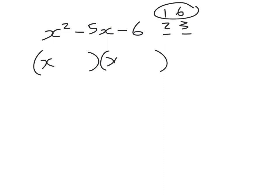So the x goes there as normal because that makes the x squared. We will use a 1 and a 6. And how do we get a negative 5 using a 1 and a 6? One of them positive, one of them negative.